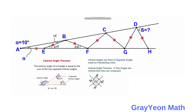Next, we extend segment BE. If we extend segment BE then we get an exterior angle, and this exterior angle is 2 alpha plus 2 alpha plus 2 alpha, which is 4 alpha. We then focus on angle ABE, which is alpha, and the vertical angle to it is also alpha by the vertical angles theorem. Since that vertical angle is alpha, this adjacent interior angle should be 4 alpha minus alpha, which is 3 alpha.